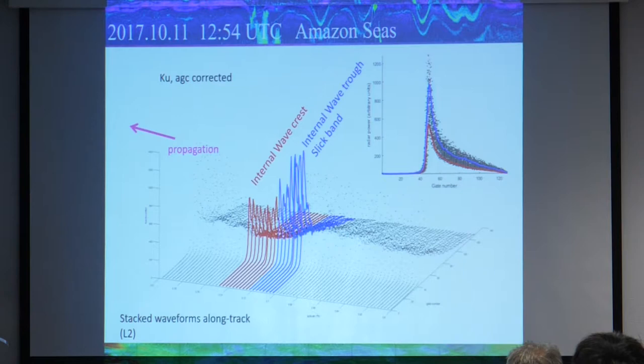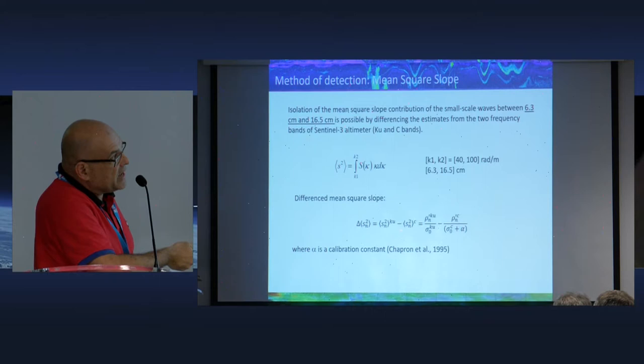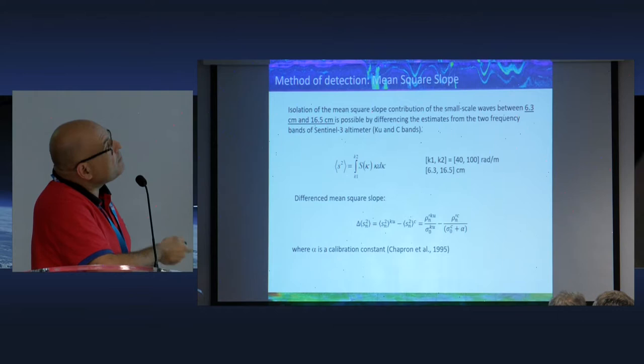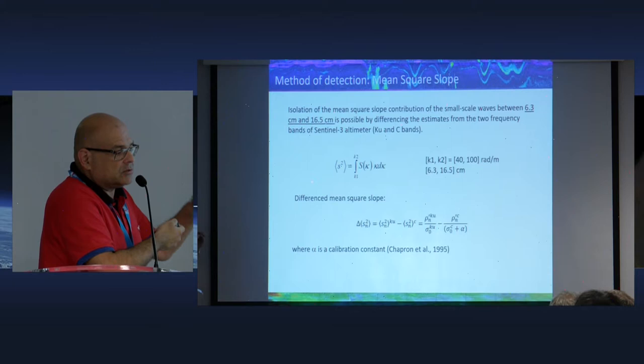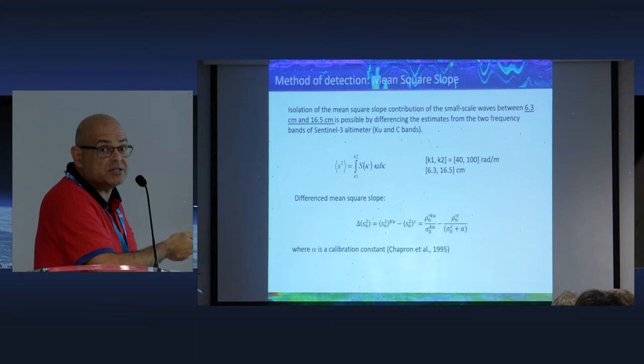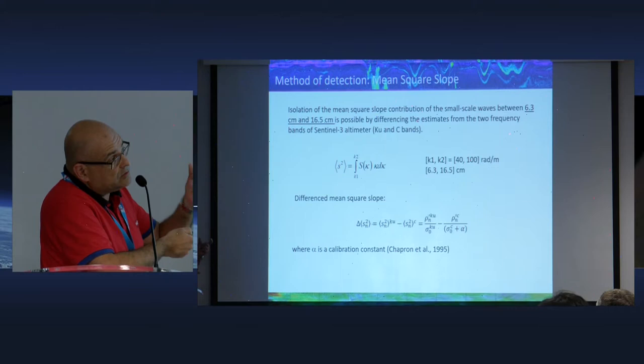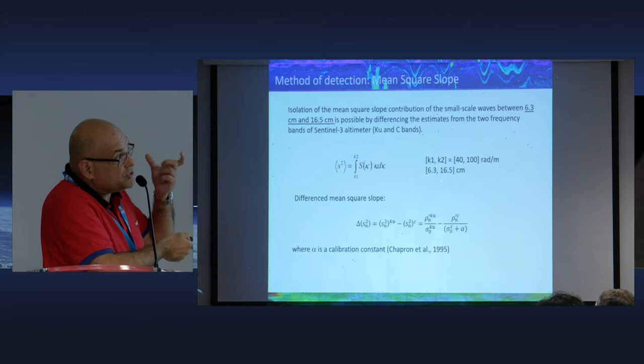All this has been done with level two data so far. The method is inspired by a paper by Bertrand. They use the differenced mean square slope from Ku and C band, which has to be tuned by a parameter and should be essentially sensitive to wavelengths on centimeter to decimeter scale, because we are separating the larger waves from smaller waves. This is exactly the space scale associated with most of the convergence and divergence within the internal wave field.